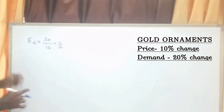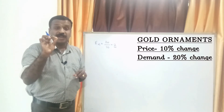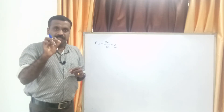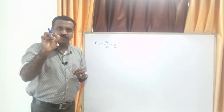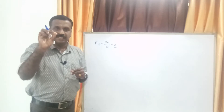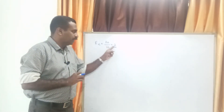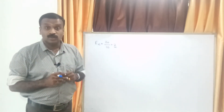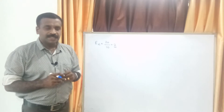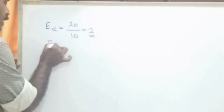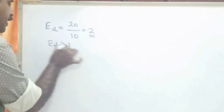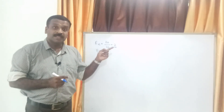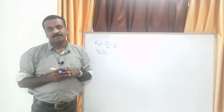So we can say that 2 is the value of price elasticity of demand, or 2 is the degree of price elasticity of demand. The value of elasticity of demand is greater than unity, which means it is Relatively Elastic Demand.